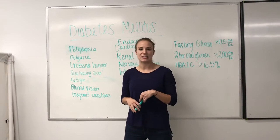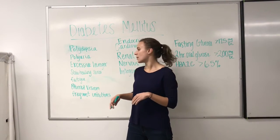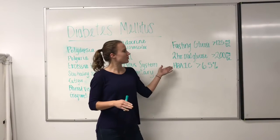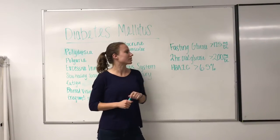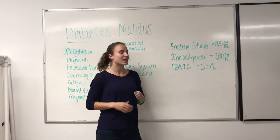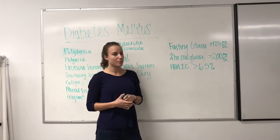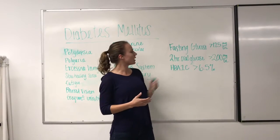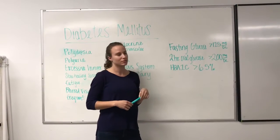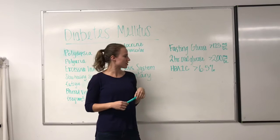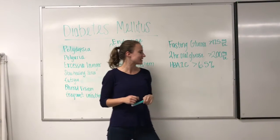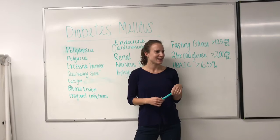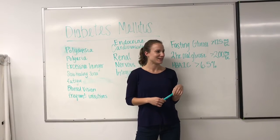Diabetes is confirmed through fasting glucose levels of greater than 125 milligrams of sugar in the blood, a two-hour oral glucose level over 200, and HbA1c greater than 6.5%.